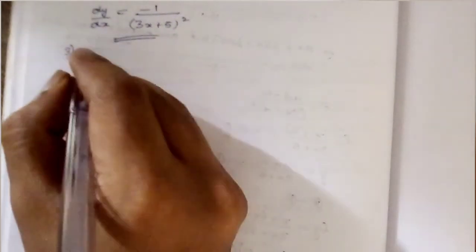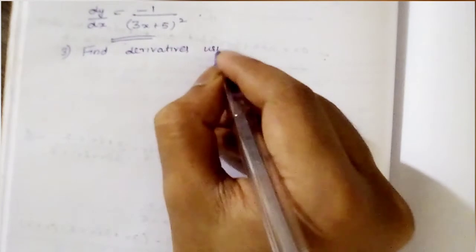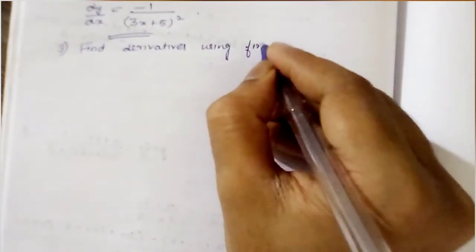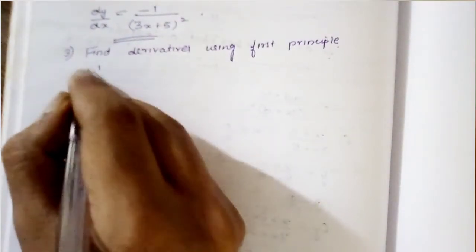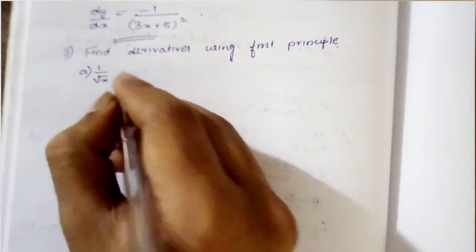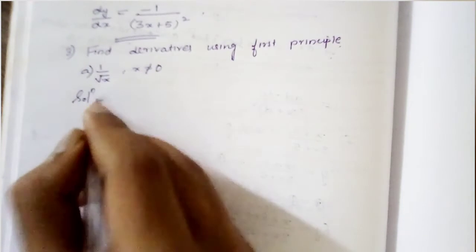Hello guys, welcome back to my channel. Today we are going to find derivatives using the first principle. The first question is 1 by root x, where x is not equal to 0.